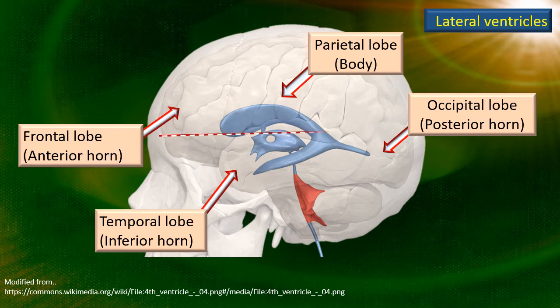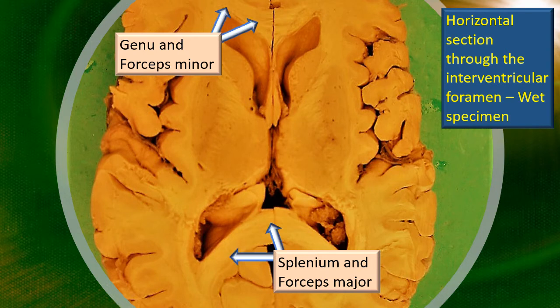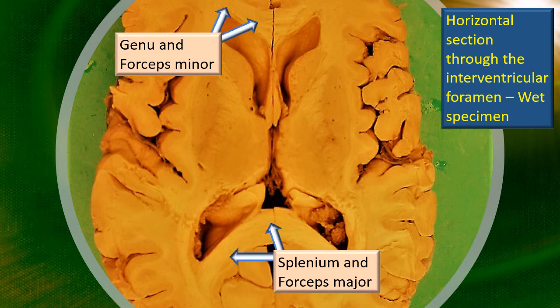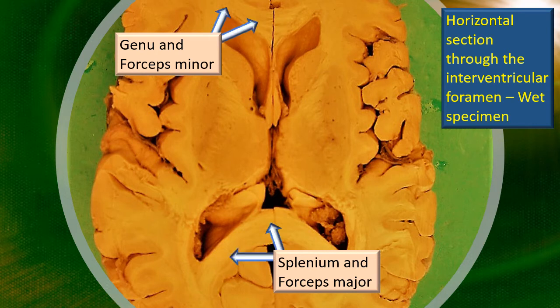Suppose we take a cross-section at the level of the interventricular foramen — the cross-section will appear like this. This section is a horizontal section through the interventricular foramen; it's a wet specimen. Anteriorly, the edge of the lateral ventricle is where the genu and the forceps minor is located, and posteriorly, where the splenium and the forceps major are located. Between these two boundaries, we will try to identify the various parts of the lateral ventricle.